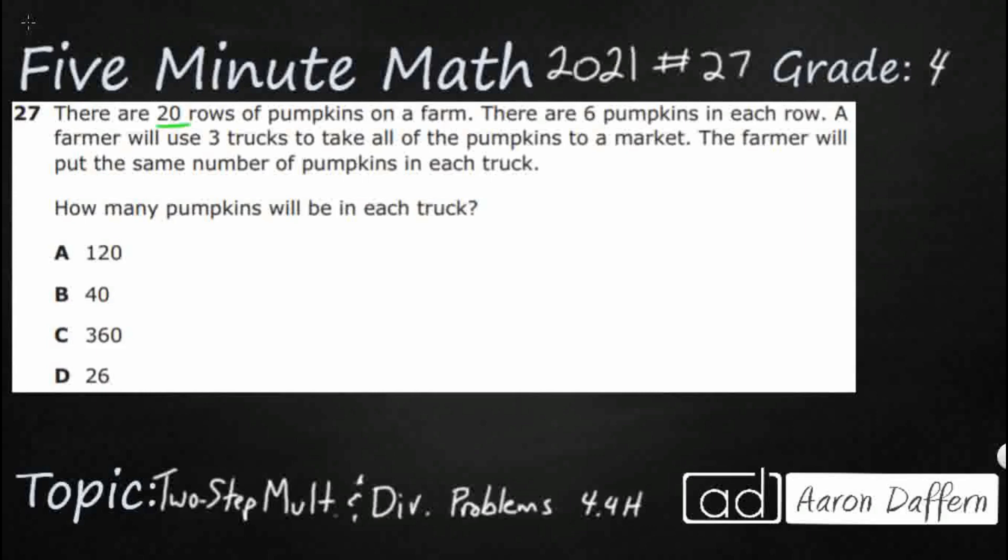We've got 20 rows of pumpkins on a farm and then there are 6 pumpkins in each row, that each is going to be important. A farmer is going to use 3 trucks to take all the pumpkins to the market, and we're going to put the same number of pumpkins in each truck. That each comes up again, same number.